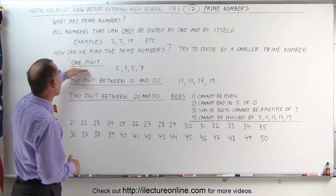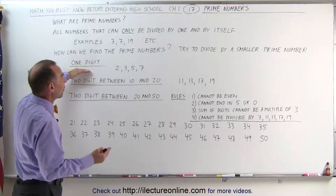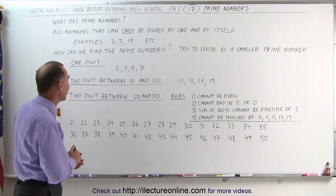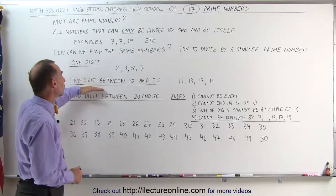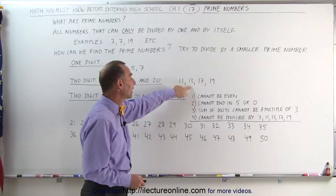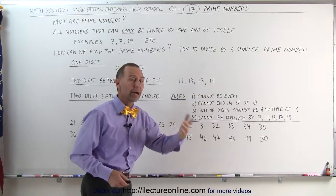For example, when we talk about a one-digit number, we should simply memorize that the numbers 2, 3, 5, and 7 are the prime numbers smaller than 10. For the two-digit numbers between 10 and 20, we can memorize that the numbers 11, 13, 17, and 19 are prime numbers as well.